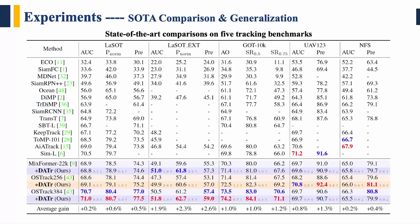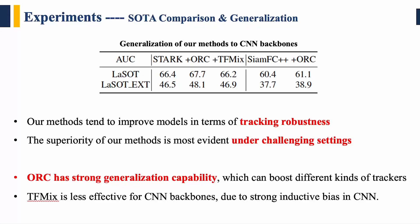Next, I will show some experimental results to demonstrate the effectiveness of our methods. Here are the SOTA comparisons on five tracking benchmarks. We apply our augmentations on two different pure-transformer tracking models. We also apply our methods on a hybrid CNN-transformer tracker STARK and a CNN tracker to analyze generalization. We conclude that our methods tend to improve models in terms of tracking robustness, and the superiority is most evident under challenging settings like challenging sequences, unseen classes, and low-resolution settings.